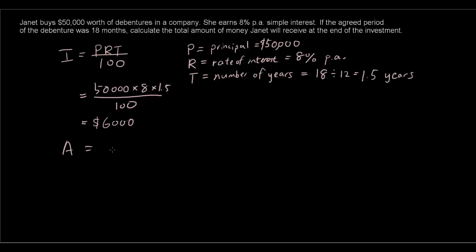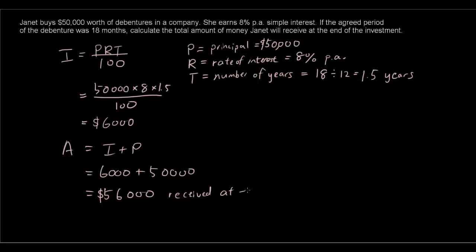The total amount Janet receives at the end is I plus P — six thousand plus the principal of fifty thousand — which is fifty six thousand dollars received at the end of the investment period of eighteen months, assuming the company doesn't go bankrupt. Thank you for watching the first tutorial on simple interest — see you next time.